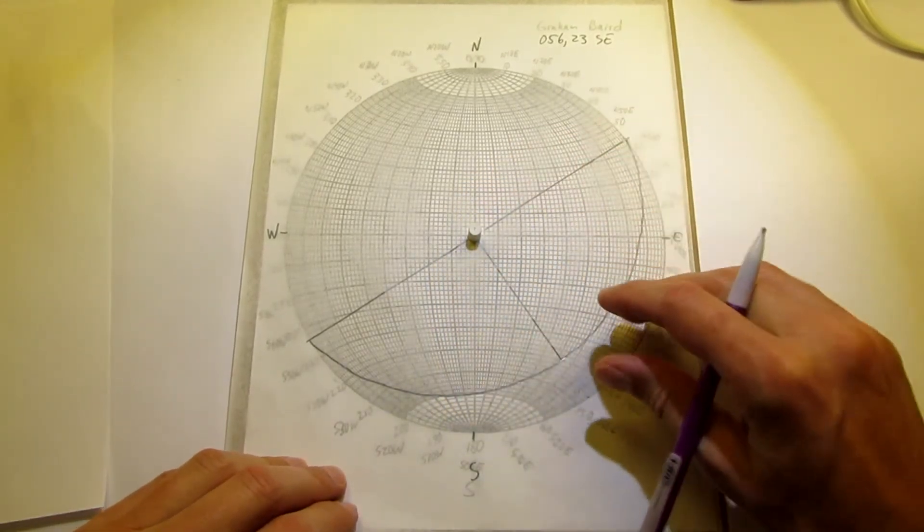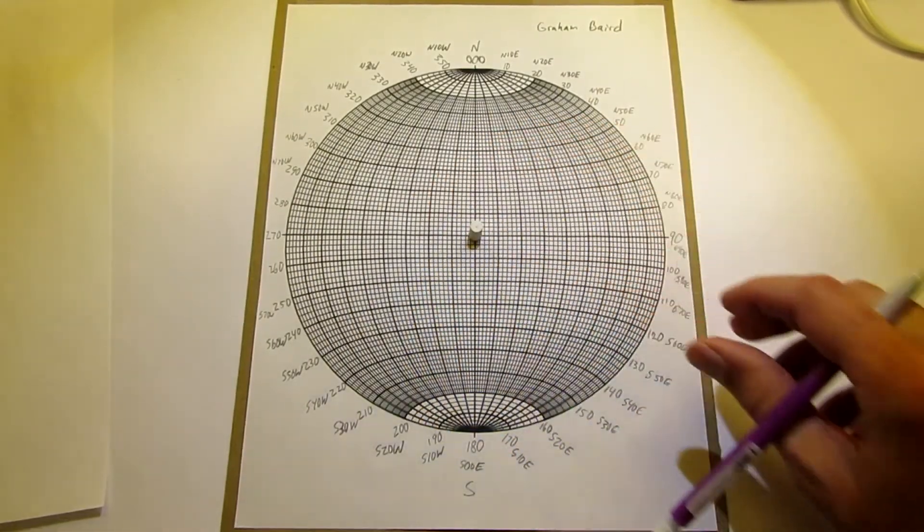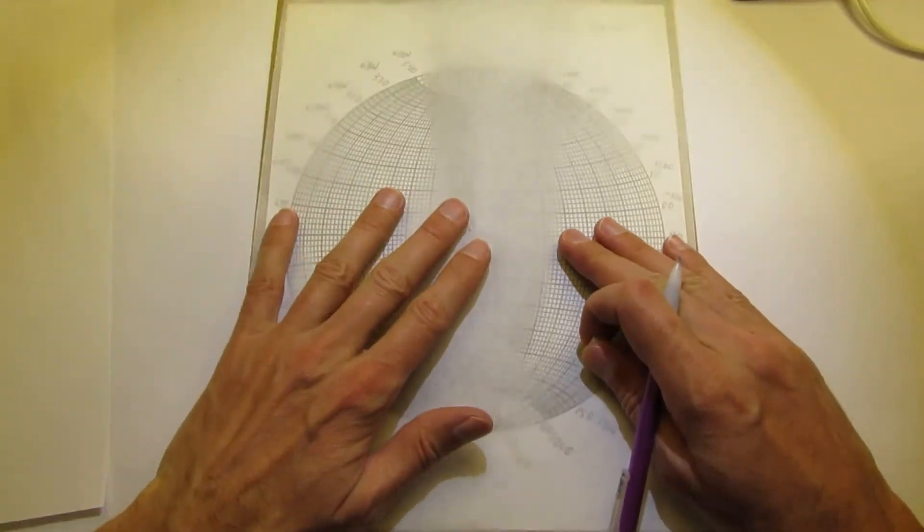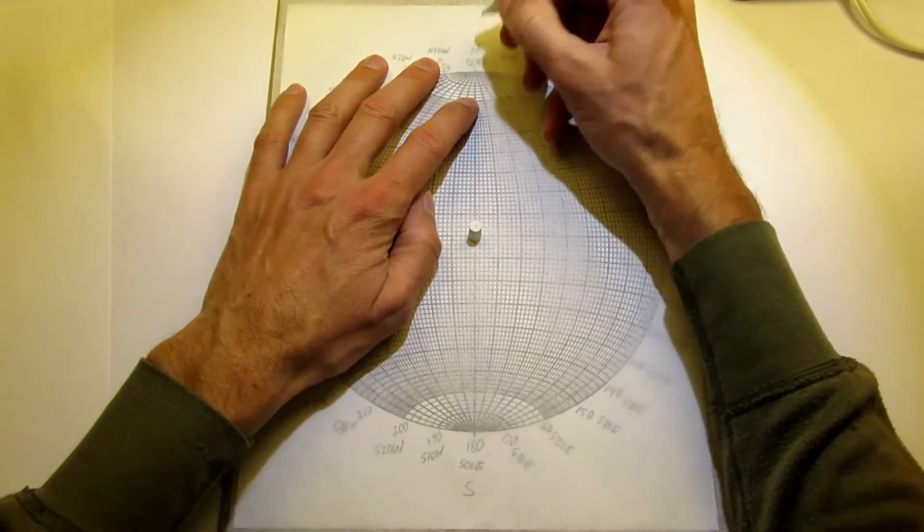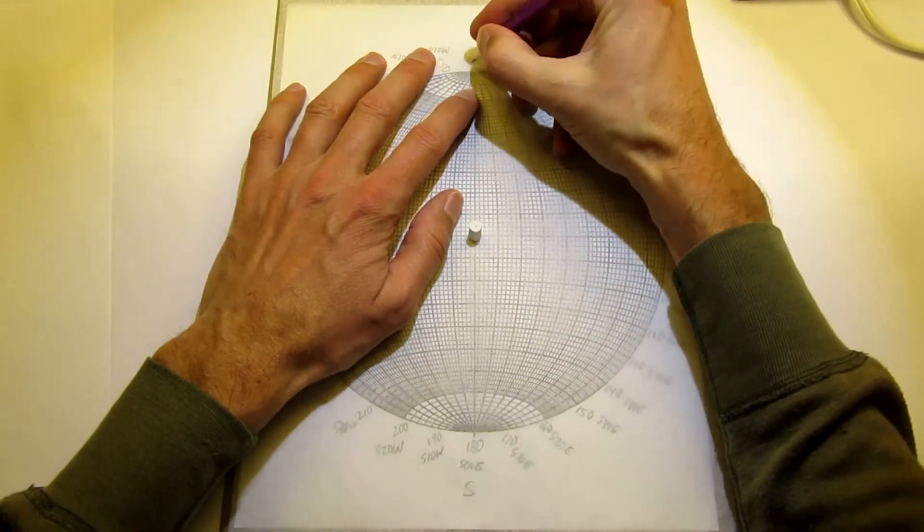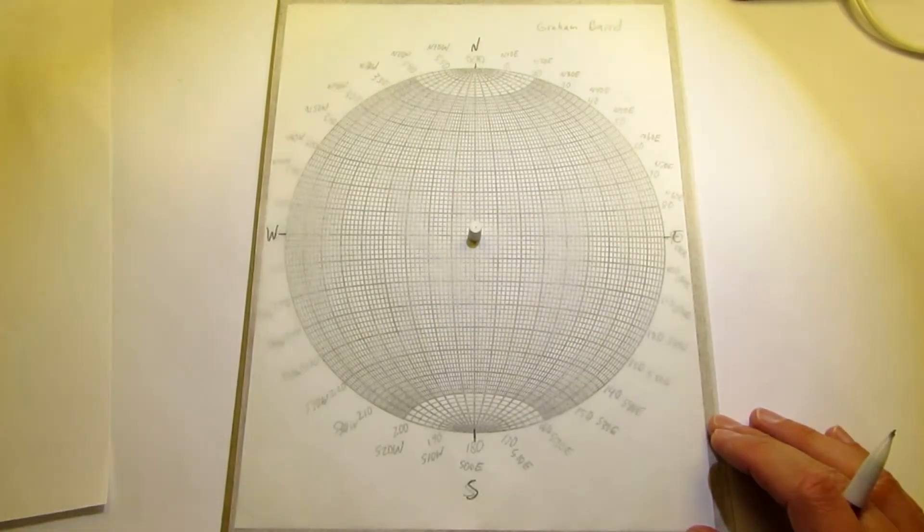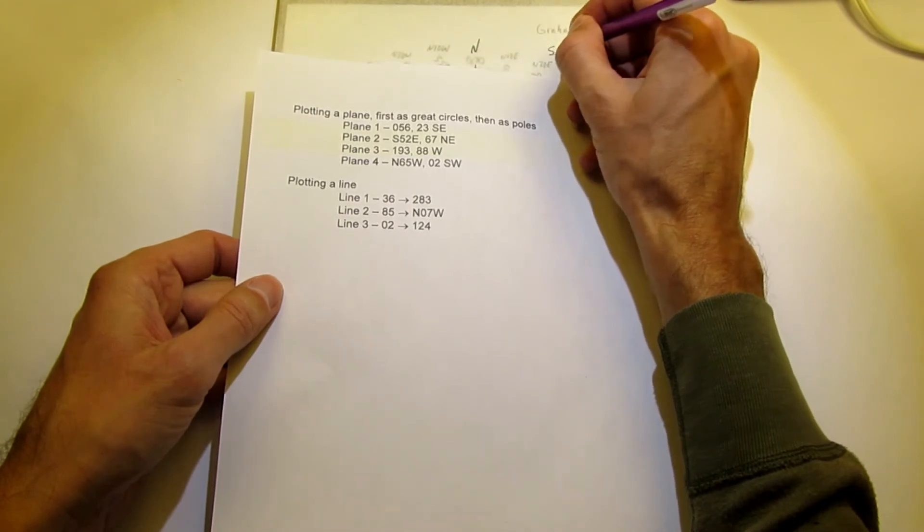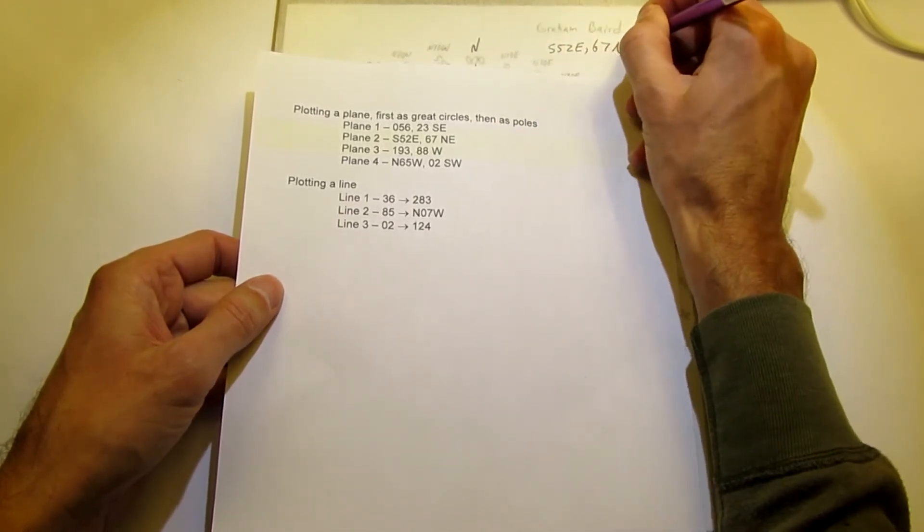I'm going to start with a fresh overlay, but you can certainly put the rest of these all on the same tracing paper. Again, start out the same way: north, south, east, west marked. The next one I'll write down: south 52 east, 67 northeast.